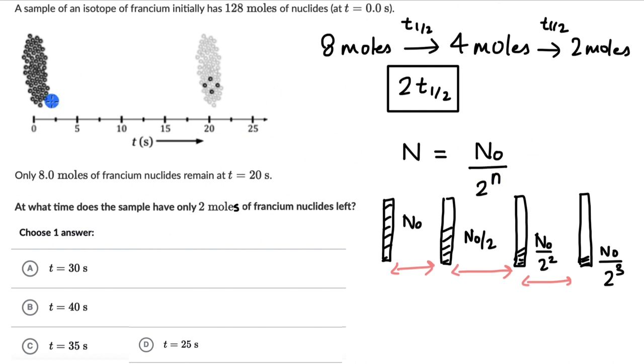So now, let's go back to this information. We have 8 nuclei remaining. We start off with 128 and we need to figure out after how many half lives is this happening. So if we take 2 to the power n to the left hand side, this will be 2 to the power n equals to 128 divided by 8.